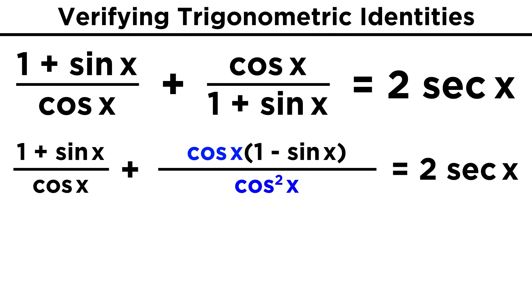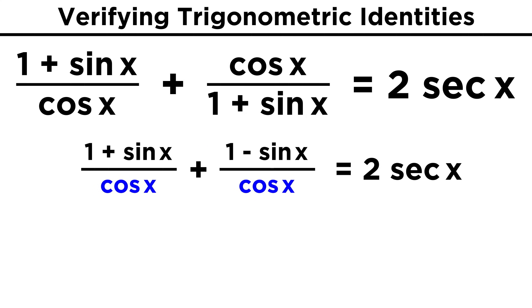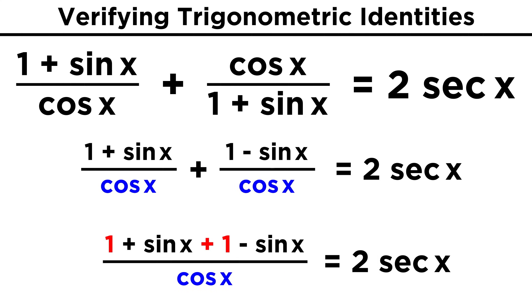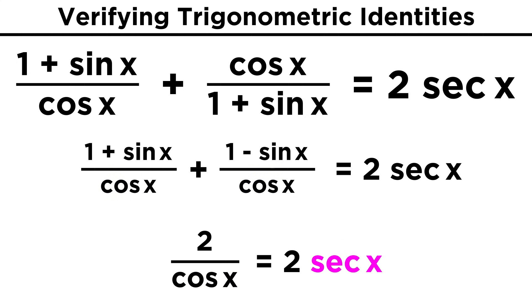Now we can cancel the cosine on the top, and one on the bottom, and we have two fractions with cosine in the denominator. This means we can add them together, and we get two over cosine, since the sines cancel. On the right, two secant is the same as two over cosine, and that's all there is to it.